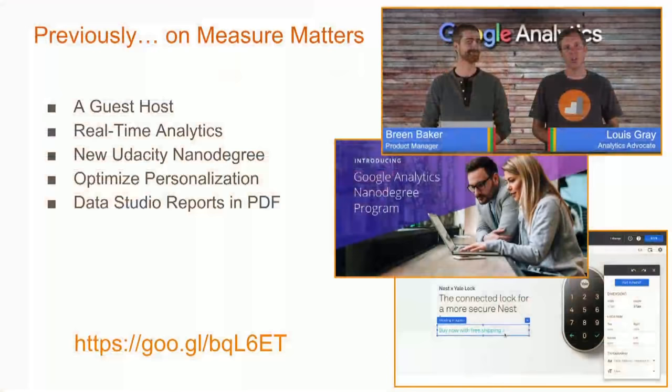Today we're going to talk about Google Optimize. And as we always do with our Measure Matters series, we do a quick recap of the last event. We had Green, a new guest host, come in to talk about real-time analytics. We talked briefly about a new nanodegree from Udacity focused on Google Analytics, personalization in Optimize, and the most requested feature for Data Studio users: exporting reports to a PDF — people were very excited when we finally launched that.